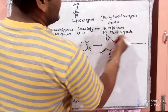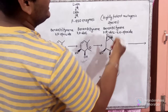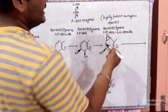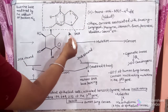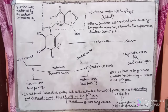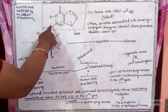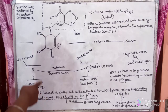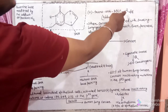The Benzo A Pyrene 7,8 Diol 9,10 Epoxide then reacts with the DNA. The DNA has a guanosine base. This is the N2 of the guanosine base. The previously formed Benzo A Pyrene 7,8 Diol 9,10 Epoxide reacts with the N2 of the guanosine base in the DNA to form the trans-anti BAP N2 dG.